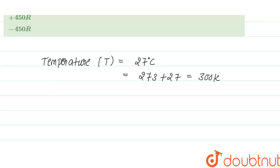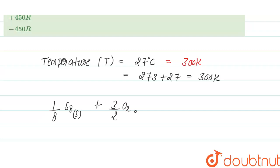So the temperature in Kelvin is 300 K. The chemical reaction given is: 1/8 S₈ solid + 3/2 O₂ gas → SO₃ gas. We have to calculate the heat change at constant pressure and constant volume for this reaction.